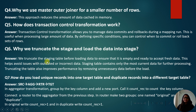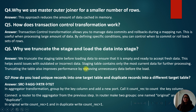Why do we truncate the staging table and load the data into it? We truncate the staging table before loading data to ensure it is empty and ready to accept fresh data. This helps avoid issues with outdated or incorrect data. The staging table then contains only the most current data for further processing, and truncating also improves performance by removing unnecessary data before the load.